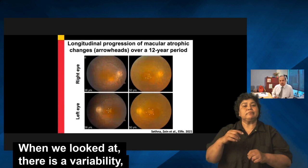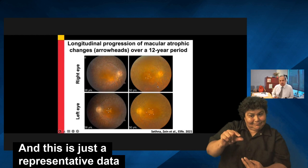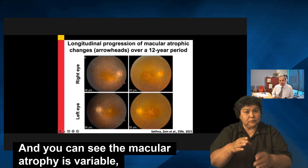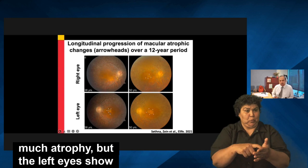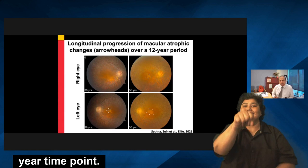There is variability both among subjects with the same variant and between the eyes of the same individual. This is representative data from one affected individual over 12 years between the right and left eye. You can see the macular atrophy is variable — at 38 years of age, the right eye doesn't show much atrophy, but the left eye shows severe macular atrophy, which progresses much further over the 12-year time point.